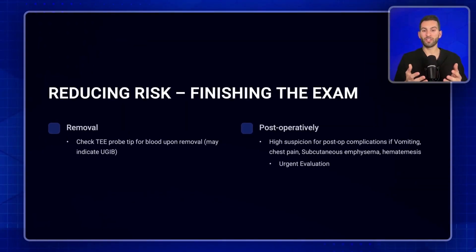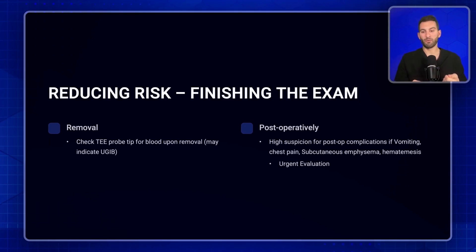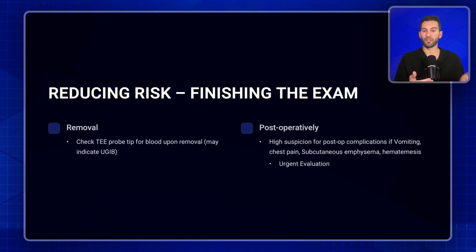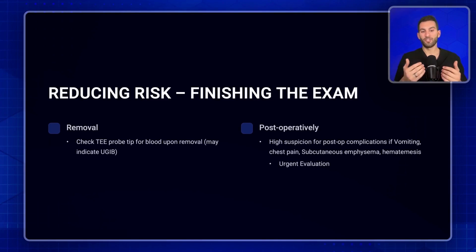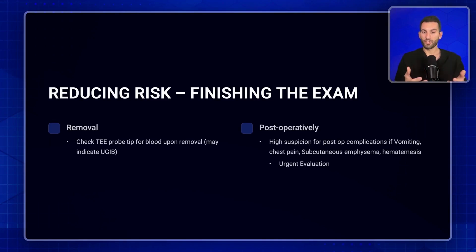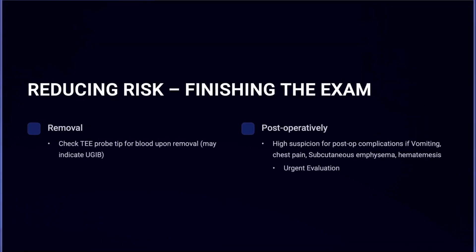Finally, if this is a very high-risk patient, only the most experienced operators should perform the procedure — this is not one for trainees. When you're done with the exam, remove the TEE probe and look at the end for any blood upon removal, as this may be an early sign of an upper GI bleed warranting further consultation. Postoperatively, if the patient has any signs of vomiting, chest pain, subcutaneous emphysema, or hematemesis, urgent evaluation by a GI doctor is indicated.